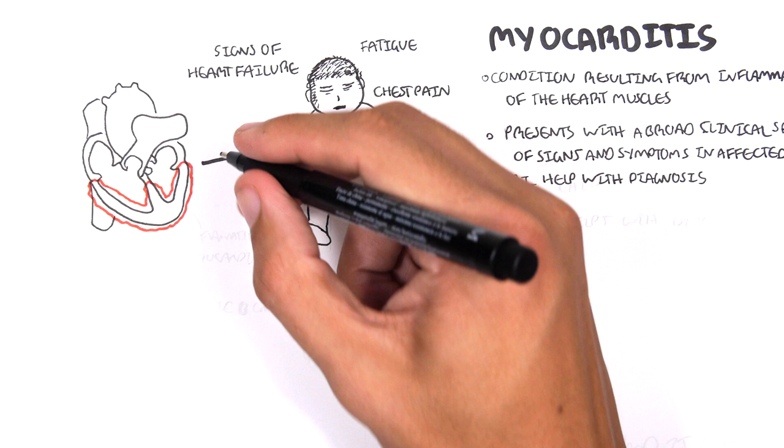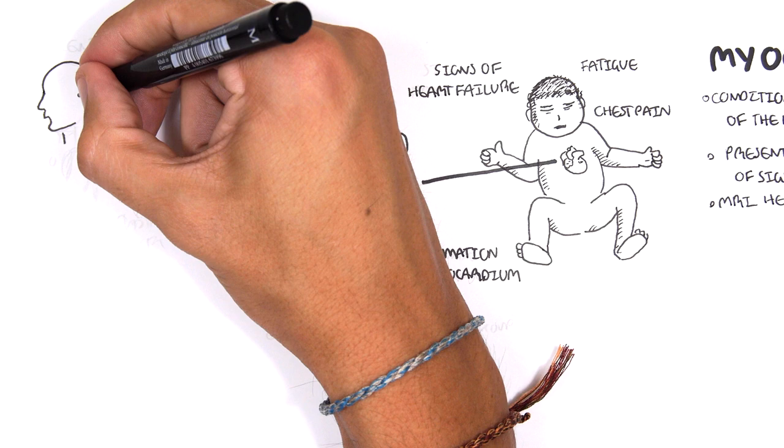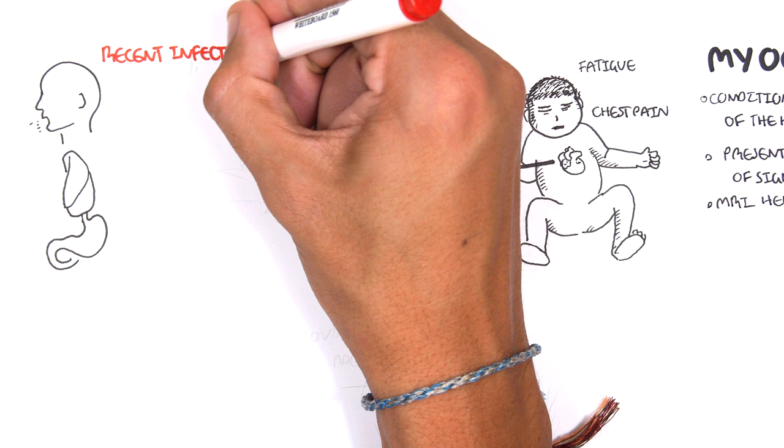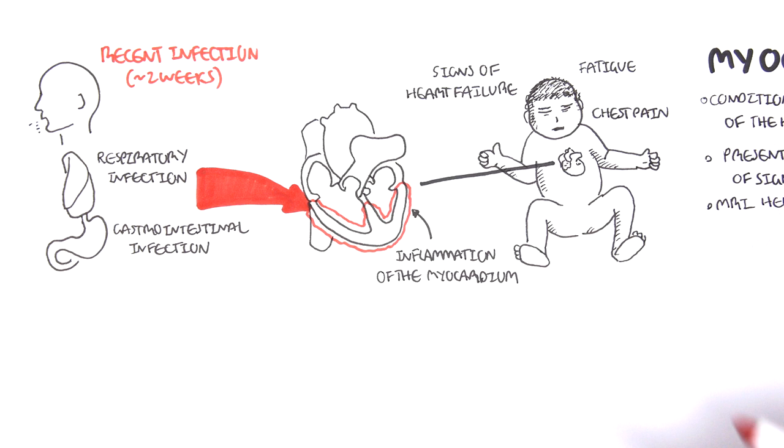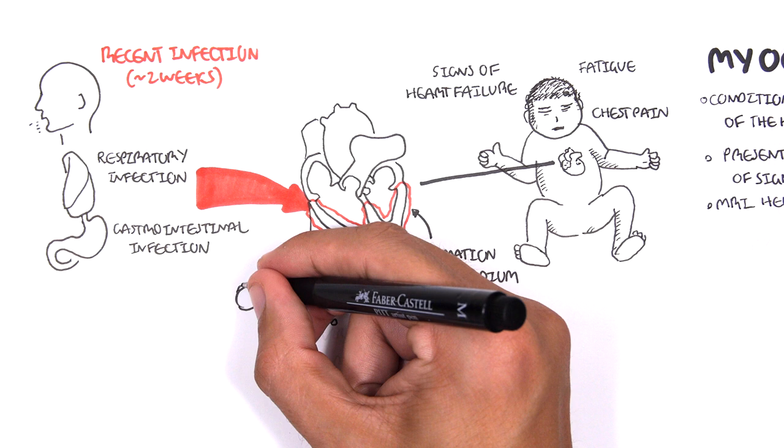The cause of myocarditis is usually secondary to a recent infection in the past two weeks. The initial infection could have been a respiratory or gastrointestinal infection which has disseminated and traveled to the heart. The common agents are viruses, specifically an enterovirus such as Coxsackie and adenovirus.